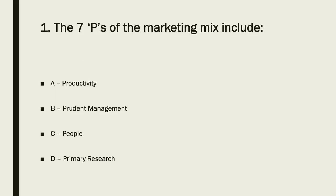From AQA Unit 3, A-level business: the answer to question one is clearly C — 'people' being one of the three extended marketing mix factors. Beyond people, you could also have physical environment or process. A, B, and D are waffle, so the answer to one is C.